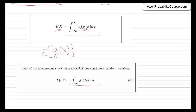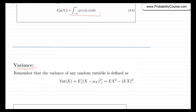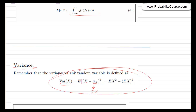So today, I want to talk about variance for continuous random variables. This is very similar to the discussion we had for variance for discrete random variables. Remember that for discrete random variables, we defined variance as the expected value of (x minus mu_x) squared, where mu is just the expected value of x. The definition of variance for continuous random variables is exactly the same.